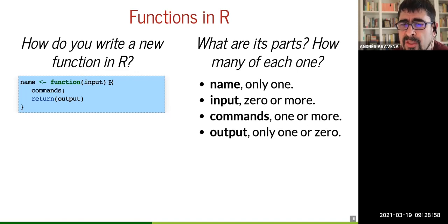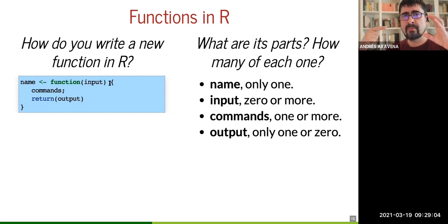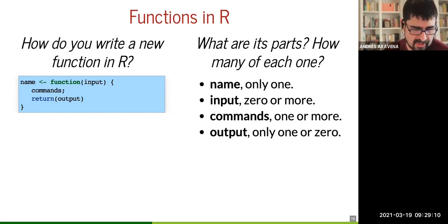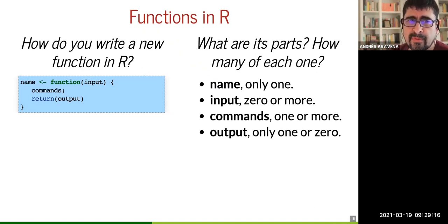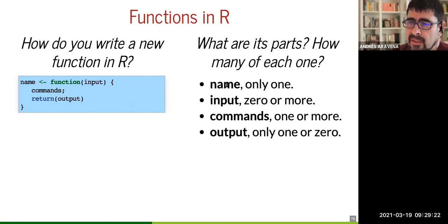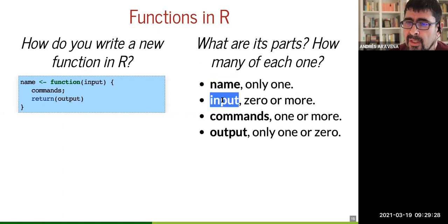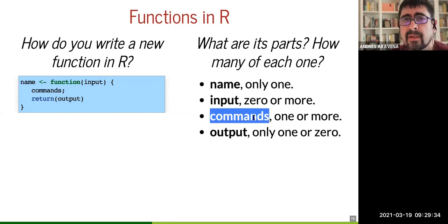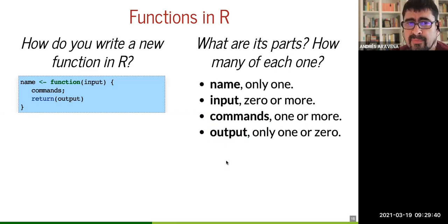A function is like a black box that takes one or more inputs and produces one output — 99% of the time you have one or more inputs and one output. There are four parts: the name of the function, the input, the commands — which is the only part we knew before — and what is going to be the output.